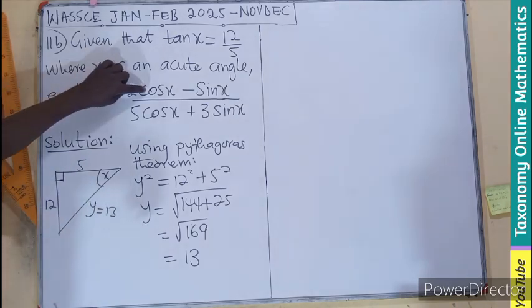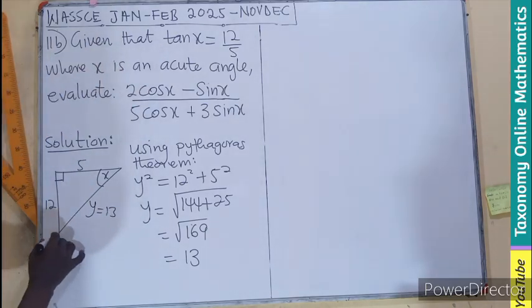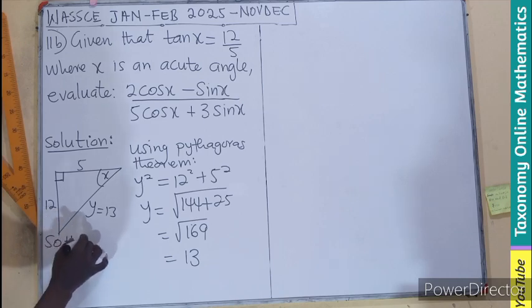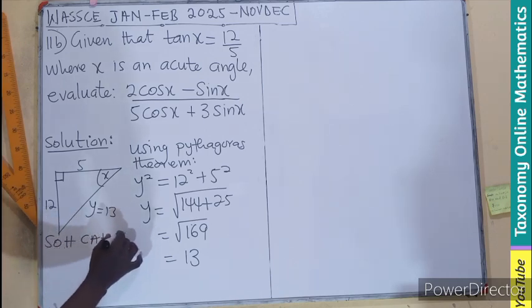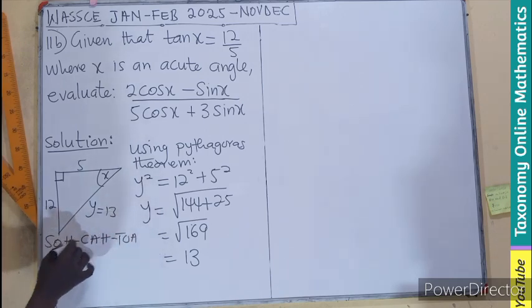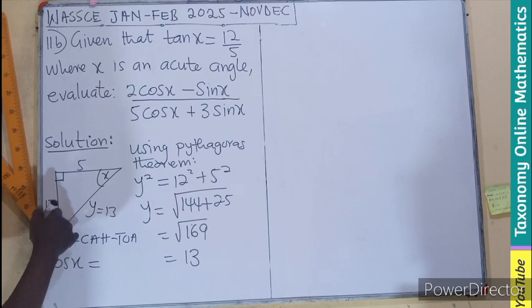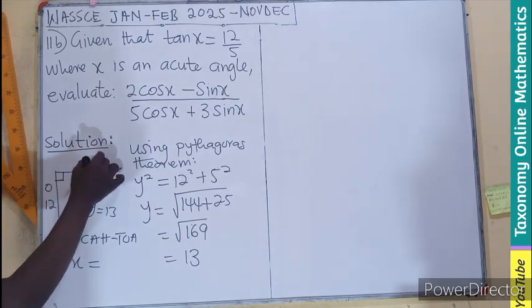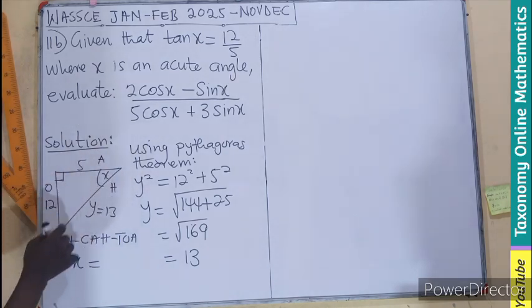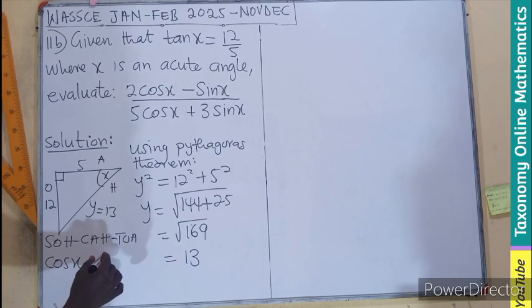So here we are looking for cosine. If I take the cosine of x, which is the adjacent over hypotenuse. And this is the opposite side, the adjacent hypotenuse. So adjacent over hypotenuse, meaning 5 over 13.